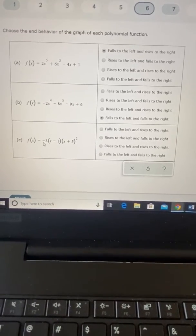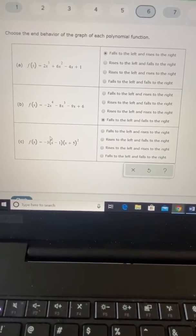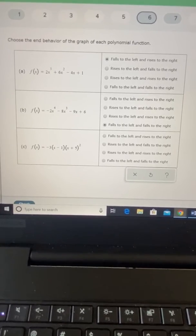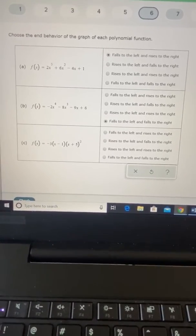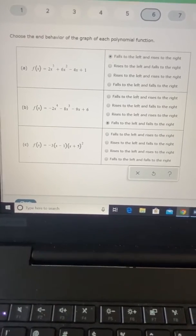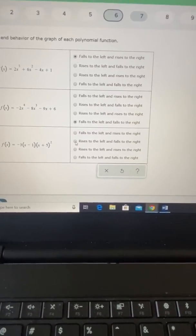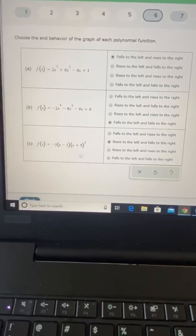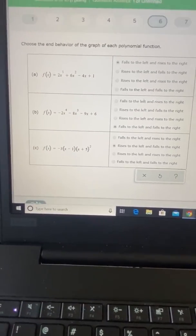So negative leading coefficient and odd degree. So that means odd degree, we're going to be rising and falling. And because it's negative, we're going to be rising in the left and falling to the right. So we want to click option 2, rising to the left and falling to the right. And then we hit check.